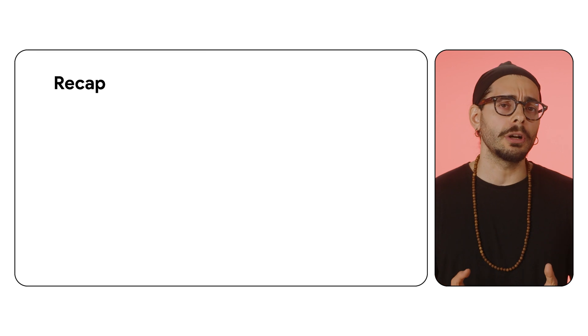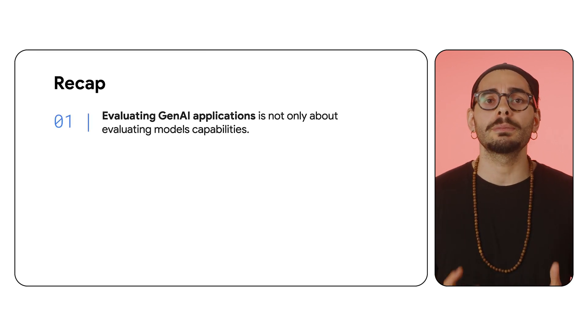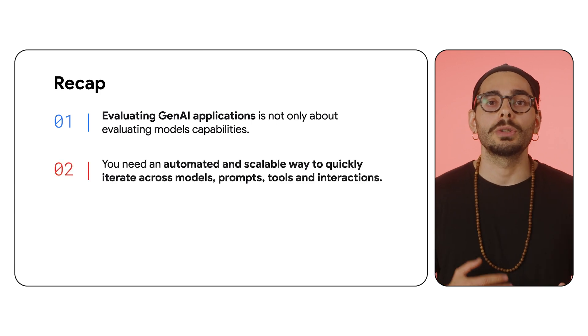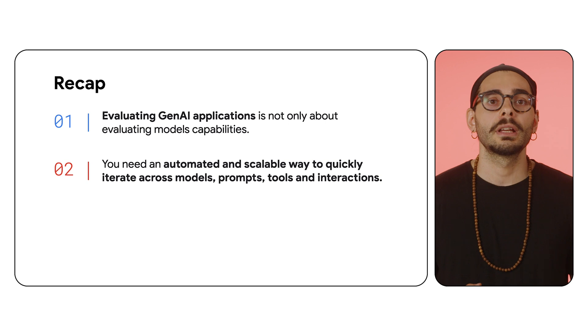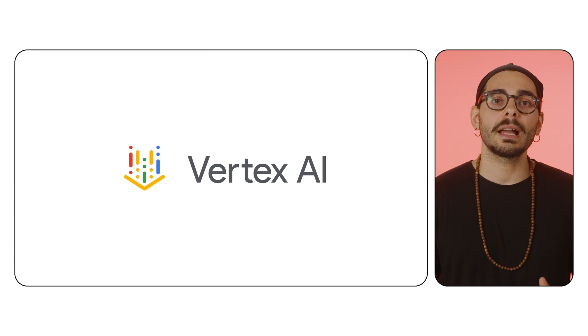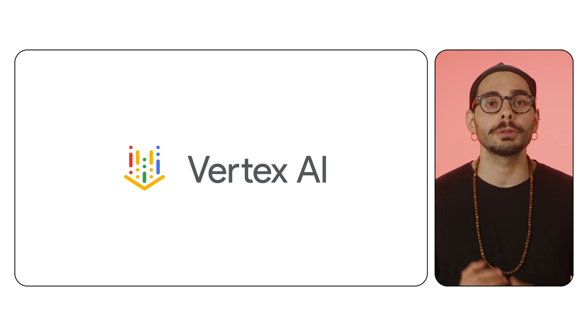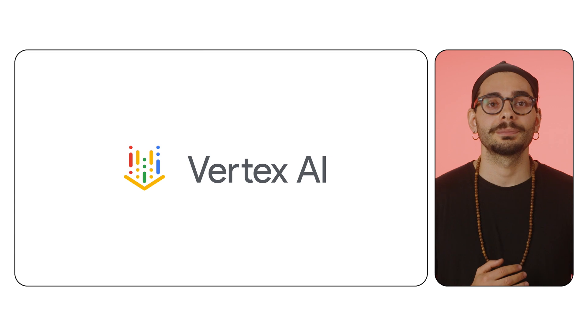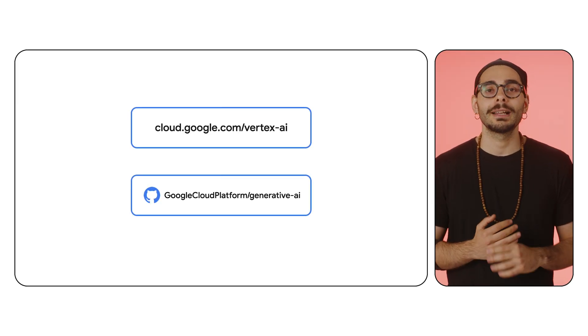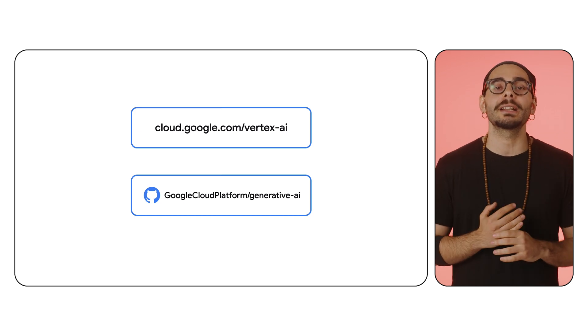Do you remember the question we started from? Evaluating a Generative AI application needs more than just model evaluation. You need an automated and scalable way to iterate across models, prompts, tools, and other components using explainable methods, metrics, and robust tracking. Vertex AI provides an end-to-end platform that gives you the power to run Generative AI evaluation at scale. What we covered today is just the tip of the iceberg — more details to come very soon. Meanwhile, check out the Vertex AI and Generative AI documentation for more information and start building more reliable and better Generative AI applications on Vertex AI. Thanks for watching!